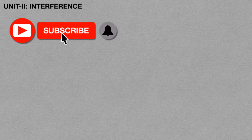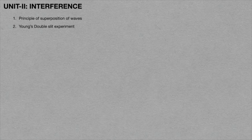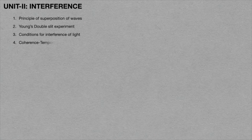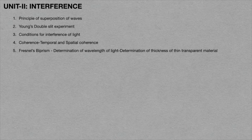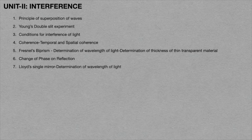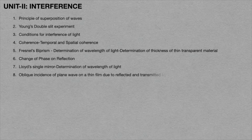In this second unit, I would like to explain these topics. First, principle of superposition of waves. Second, Young's double-slit experiment. Third, the condition for getting interference of light. Fourth, coherence, temporal coherence, and spatial coherence. Fifth, Fresnel's biprism and determination of wavelength of light. Also, determination of thickness of thin transparent film. Sixth, phase change and reflection. Seventh, Lloyd's single mirror method and determination of wavelength of light. Eighth, oblique incidence of plane wave on a thin film due to both reflected and transmitted light — that means cosine law.